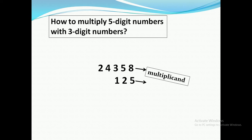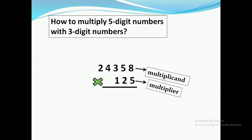First of all, I will take the unit place of the multiplier and multiply it with the multiplicand. As you know, in the unit place of the multiplier we are having the number five.